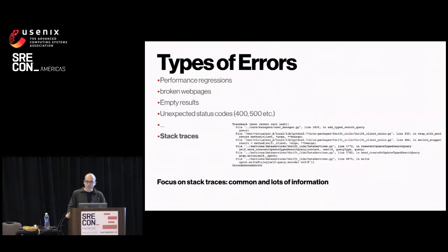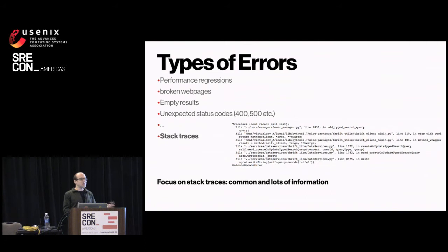Many of those previous errors also involve stack traces — 500 errors are almost always stack traces, and empty results could be too. What makes stack traces really nice is they're very common, and they also have a lot of information we could use to automate the debugging process. With a performance regression you have to run all kinds of tests, but stack traces show you exactly what parts of code are broken.